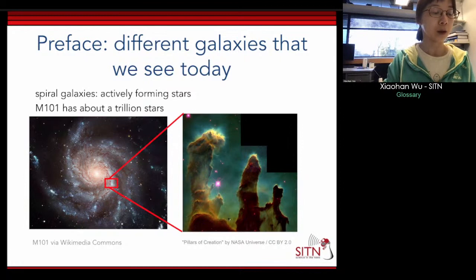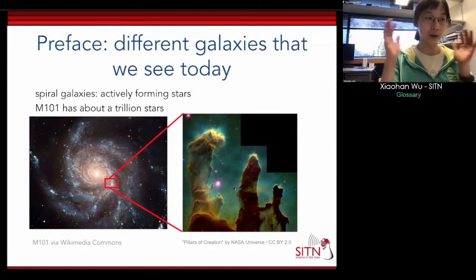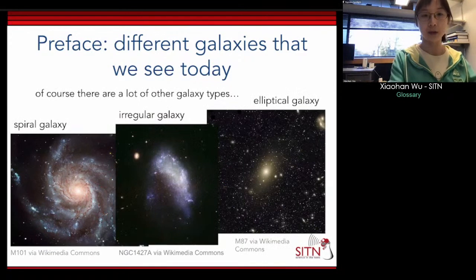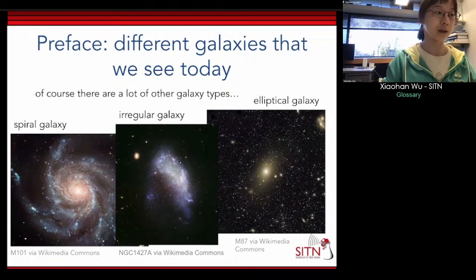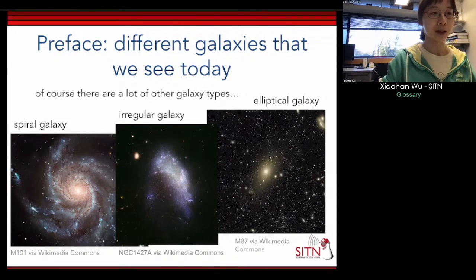If we zoom into one of the spiral arms, we can see features where stars are forming within the gas. This is the famous 'Pillars of Creation,' taken within the Milky Way. You can see stars are forming in this gas, and when they form they expel the gas, creating these finger-like structures. Of course there are many other galaxy types — irregular galaxies and elliptical galaxies, for instance the famous M87.